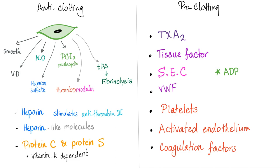Heparin — do we have heparin in our bodies? Yes, right now all of you have heparin in your body, no exception. It stimulates antithrombin 3, which inactivates the serine proteases — factors 7, 9, 10, 11, 12. Then heparin-like molecules, specifically heparan sulfate. Protein C and S are the brakes of coagulation; they are vitamin K dependent. Those were the anti-clotting factors.